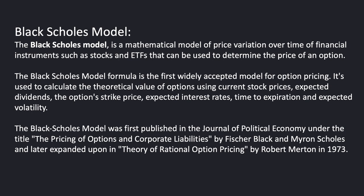The Black-Scholes model was first published in the Journal of Political Economy under the title 'The Pricing of Options and Corporate Liabilities' by Fisher Black and Myron Scholes. The formula was later expanded upon in the 'Theory of Rational Option Pricing' by Robert Merton in 1973. And they did win a Nobel Prize in economics for their work.